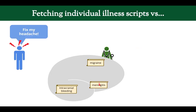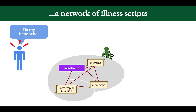We store illness scripts in our brain, and this is how the novice will do it — there'll be an illness script for migraines, for meningitis, and for intracranial bleeding. But a patient is going to come in not asking questions about migraines; they're going to say, can you fix my headache? So now you need to find all these unconnected illness scripts in your head. The way the expert stores this is through a network of illness scripts. They're all connected through the concept of a headache, so if someone complains of a headache, it points to the illness scripts for migraines, meningitis, and intracranial bleeding — and you can pull them all up together through this network.